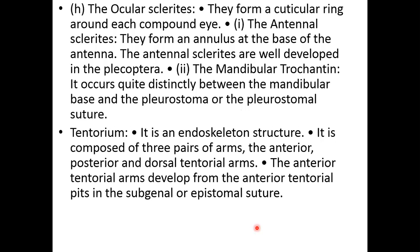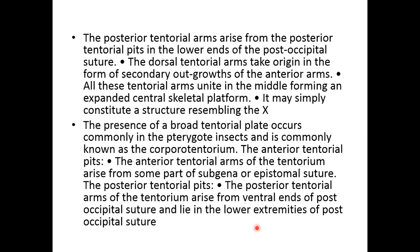The tentorium is also known as the endoskeleton, which is present in the head. It is supposed to provide space for the attachment of the muscles and the mouthparts. This is an X-shaped structure present inside the head, forming the endoskeleton.